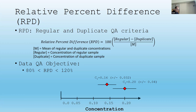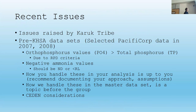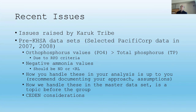Now we can talk about what happened. The Karuk Tribe contacted us earlier this year — this is pre-KHSA data, but some has snuck into the KHSA data too. Two things happened. PO₄ values are greater than total phosphorus. As Randy said, total phosphorus includes PO₄ — the soluble reactive phosphorus, the inorganic form that a plant can uptake — plus organic phosphorus equals total. How then can PO₄ be greater than total phosphorus? You can't have more soluble phosphorus than total phosphorus.